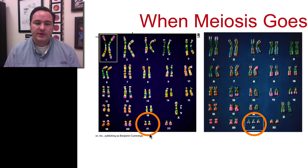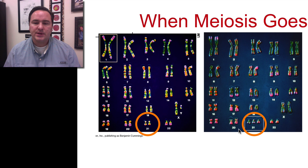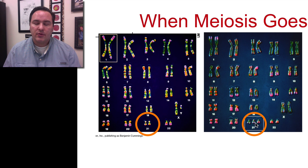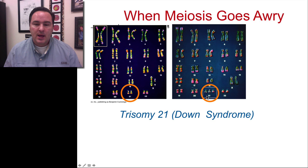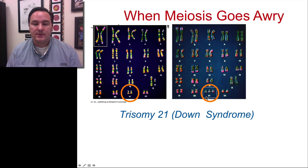What do you notice down here in the 21st pair? Over in this karyotype there are two chromosomes — those two homologous pairs. But over here we have three chromosomes from that 21st pair. This is what we call a trisomy, because there are three of those chromosomes. And this happens to be trisomy 21, also known as Down syndrome.